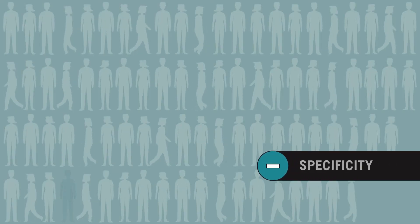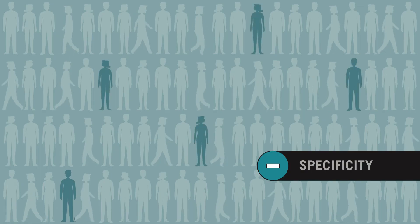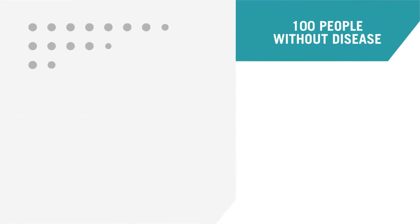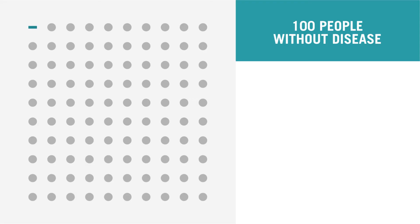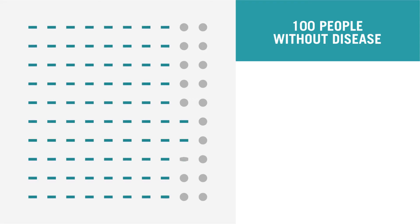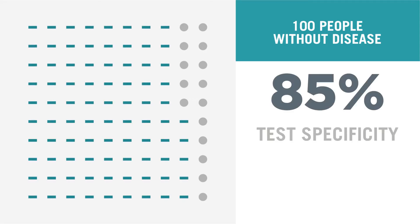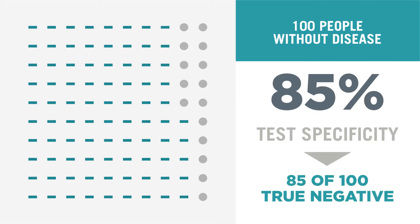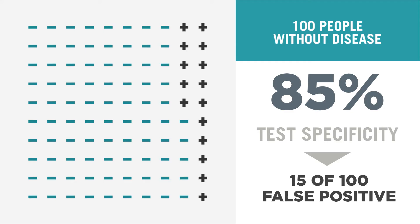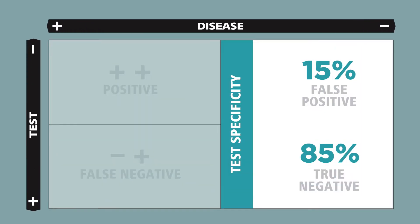Specificity measures how well a negative test identifies people without disease. If we know there are 100 people without a disease and 85 test negative, the test has 85% specificity. A test with 85% specificity will correctly return a negative result for 85% of people without disease, but means a 15% rate of people who are positive but don't have disease, or false positives. Here's how this looks in a traditional 2x2 table.